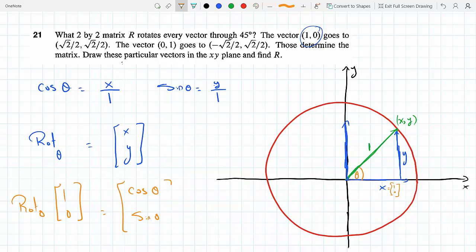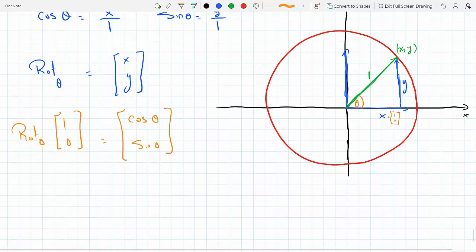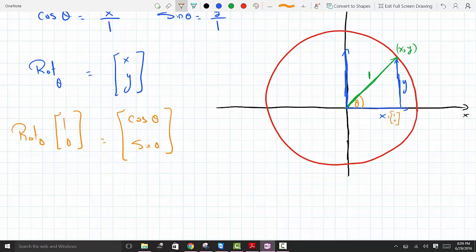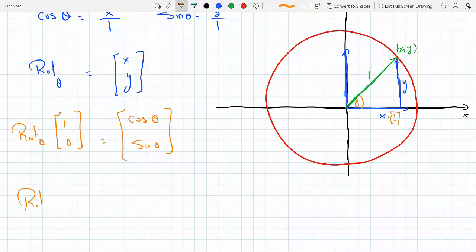I will get the x component will be the cosine and the y component will be sine theta. So now I can apply the specific case of 45 degrees. So if I apply the specific case of 45 degrees, I will get 1, 0 becoming cosine 45 and sine 45. So this will be 1 over root 2 and 1 over root 2. They're the same in that special triangle.